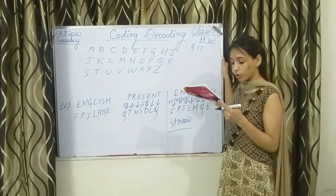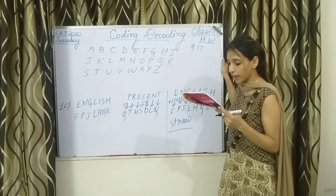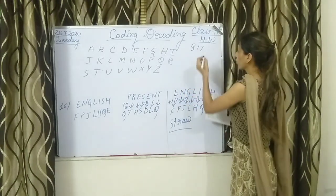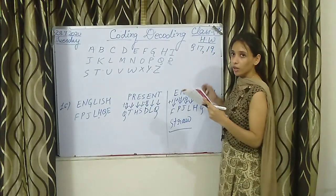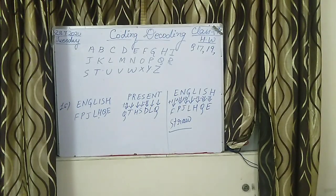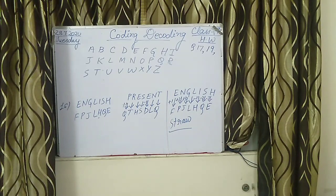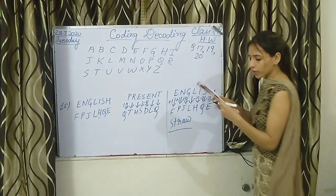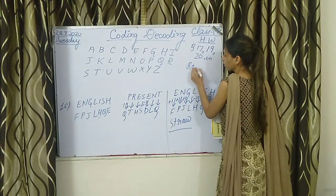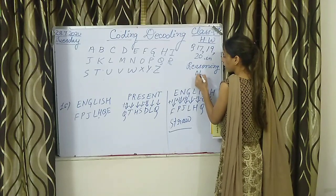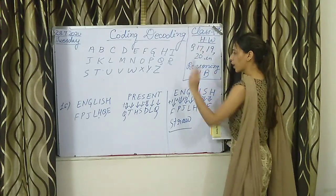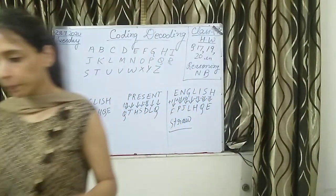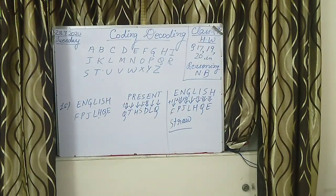After that, question number 19: if in a certain code language, RESULT is coded as TLURES, then how will REPEAT be coded in the same language? You will be doing question number 19 by yourself. Question number 20 is also the same — you will do it by yourself and write these questions in your reasoning notebook. If you face any doubt, you can ask me. We will continue in the next lecture. Thank you.